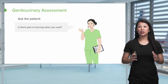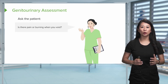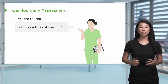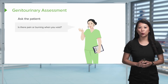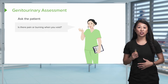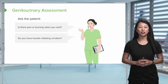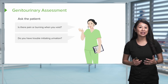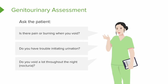When we provide visual inspection of the patient's GU assessment, there are other things to consider. We also want to ask some particular questions: Is there any pain or burning when you void? This could mean the patient has a urinary tract infection. Do you have trouble initiating urination? This could be anything from prostate issues to a UTI. And do you void a lot throughout the night? We call that nocturia.